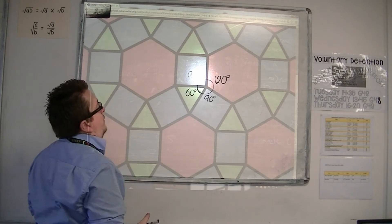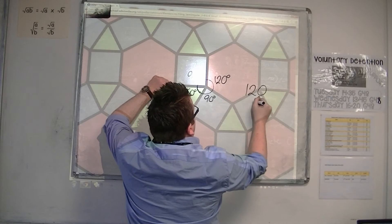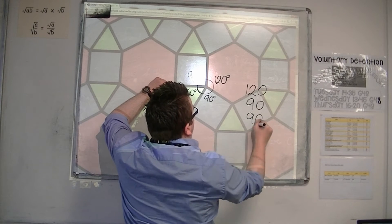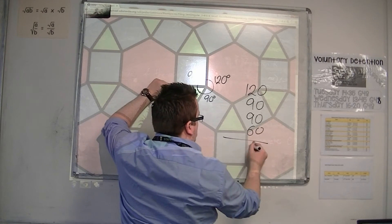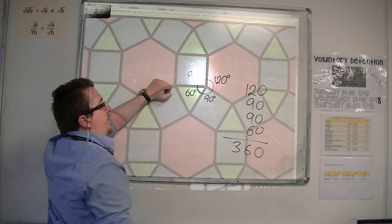So the key principle is that what we have is 120, 90, 90 and 60, which add up to 360 degrees.